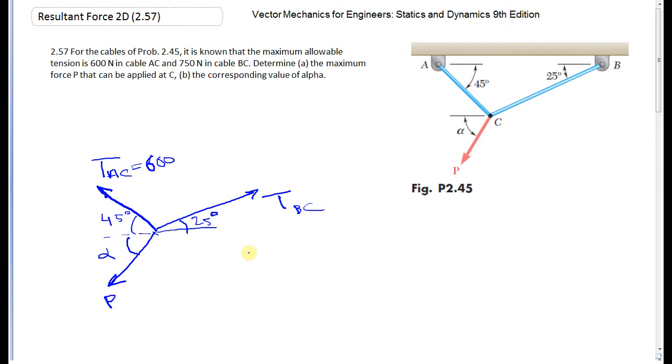First I write the equilibrium in x direction, which is sigma fx equals 0. So TBC cosine 25 negative TAC times cosine 45 negative P cosine alpha is equal to 0.